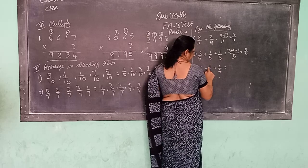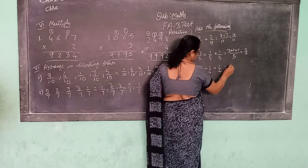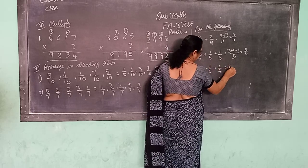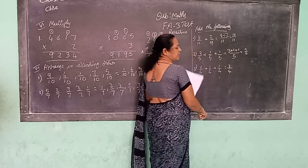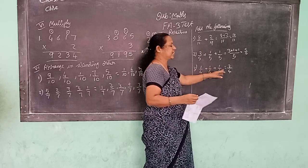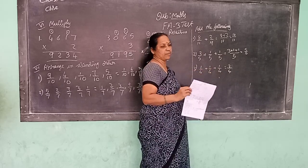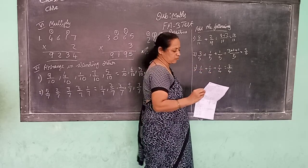See: 1 plus 1 is 2, 2 plus 1 is 3. So the answer is 3 by 4. You can add this directly — add the numerators and keep the denominator as it is.